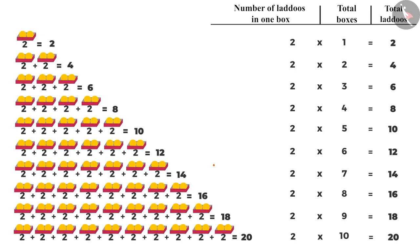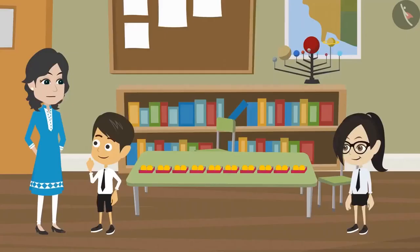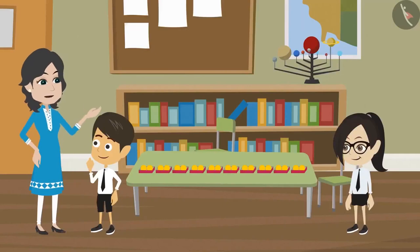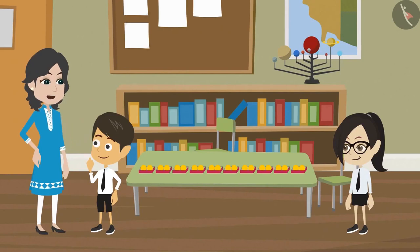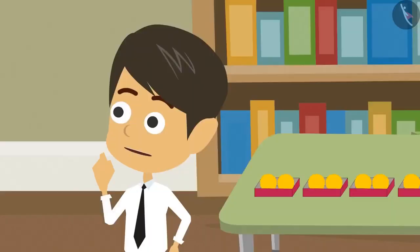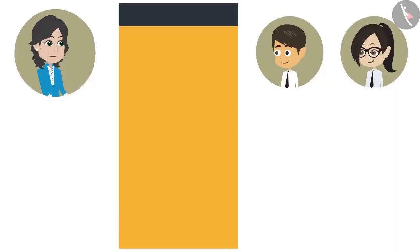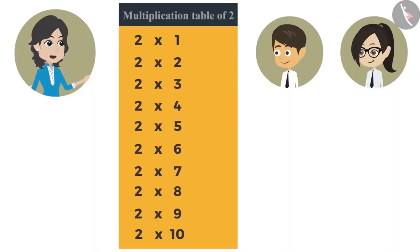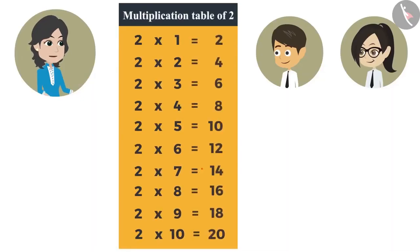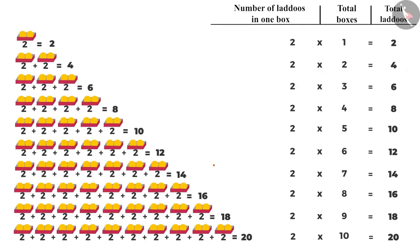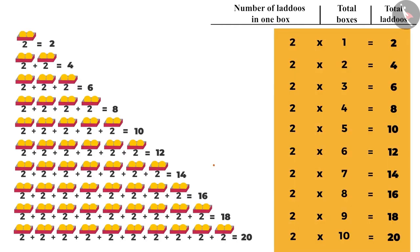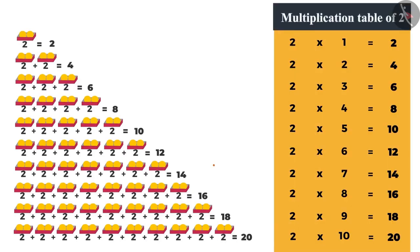It is easier to multiply two numbers than adding the same number again and again. That is why it is very important to memorize the tables. Otherwise, you have to use a pen and paper even for simple calculations. What are tables? The list obtained when you multiply a number by 1 to 10 is called the multiplication table of that number. Just like you have multiplied 2 by 1 to 10 and obtained this list — this is the multiplication table of 2.